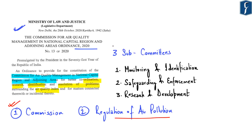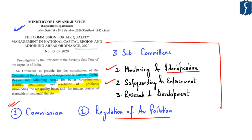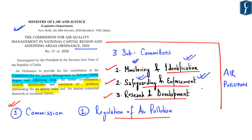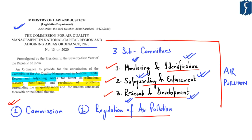As per this ordinance, three subcommittees are established: number one, monitoring and identification; number two, a subcommittee for safeguarding and enforcement; and number three, a subcommittee for research and development. The commission is thus empowered with respect to monitoring and identification of problems related to air pollution in NCR, providing safeguards and enforcing them to curb air pollution, and providing for research and development to find innovative techniques to curb air pollution especially during winters.